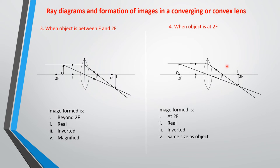Case 3 — when the object is between the principal focus and the center of curvature of the lens. This is the ray diagram: the image will be beyond 2F. The image is real because it is an actual intersection of rays, it is inverted, and it is magnified — larger than the object, as you can see here. This case of image formation from different object positions is very important.